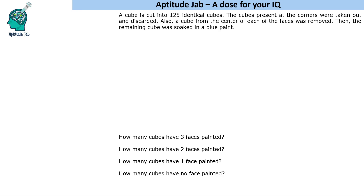The remaining cube was soaked in blue paint. If a cube is cut into 125 identical pieces, the only possibility is 5 along its length, 5 along its width, and 5 along its height — so a 5×5×5 cube. There are 8 corners in a cube, which were discarded, and 6 faces, from each of which the center cube was removed. The remaining cube was soaked in paint.